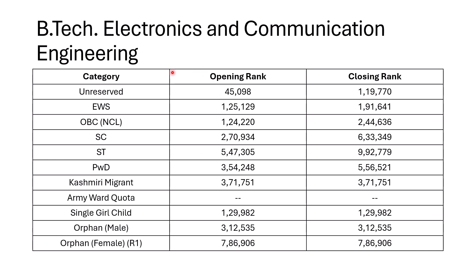For Electronics: Unreserved 1 lakh 19,000, PWD 1.91 lakh, OBC 2.5 lakh bracket, SC 6.3 lakh, ST goes to 9.9 lakh. PWD 5.56 lakh, Kashmiri Migrant 3.719 lakh, Single Girl Child 1.29 lakh, Orphan Male 3.12 lakh, Orphan Female 7.86 lakh. If you had ST rank and registered for this course last year, you just had to sit for the exam and you would have gotten in.